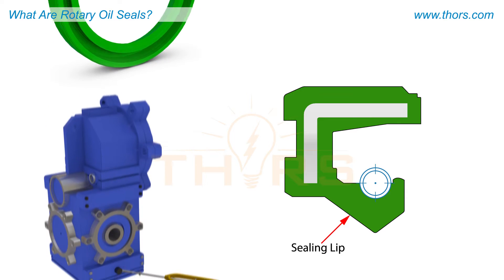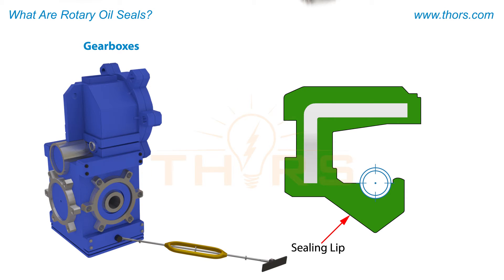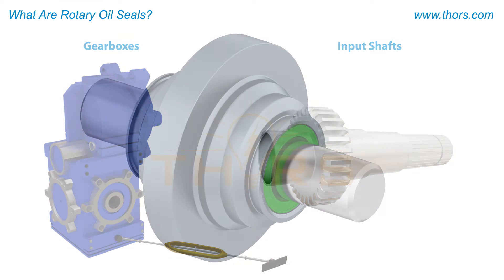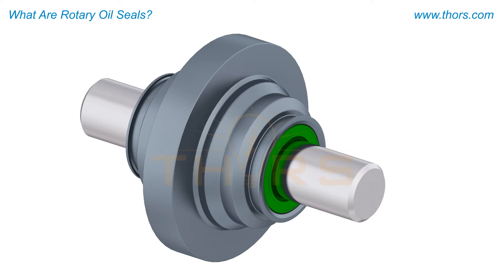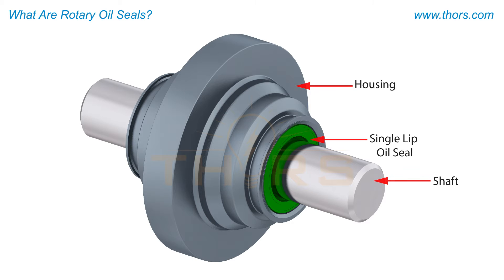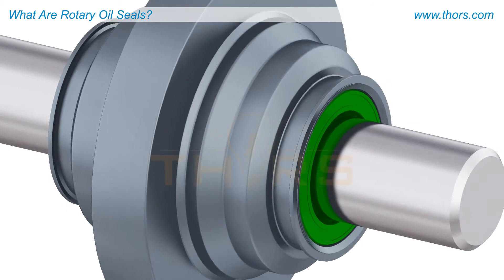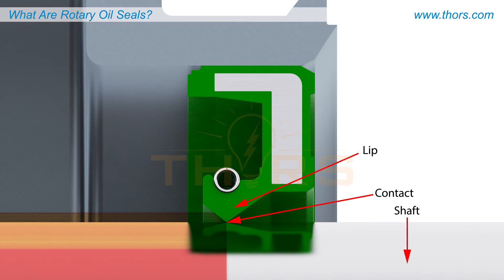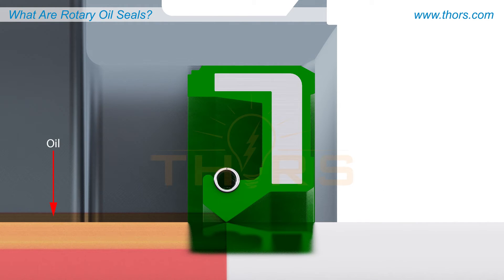In profile view, the single sealing lip is seen at the bottom. These seals are commonly used in gearboxes and input shafts. Here is an example of a single lip oil seal fixed into a housing and onto a shaft. In profile view, it is clear that the single sealing lip makes direct contact with the shaft.